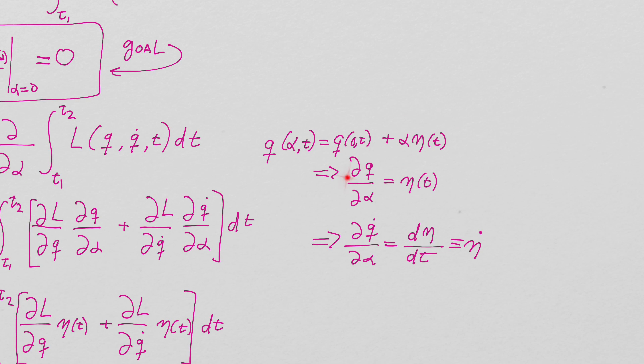So now that I'm looking for this, I take advantage of the fact that q alpha and t is q zero of t plus alpha eta of t. So partial q partial alpha is in fact eta of t, because this doesn't depend on alpha and this doesn't depend on alpha. This only depends on time, it only depends on time.